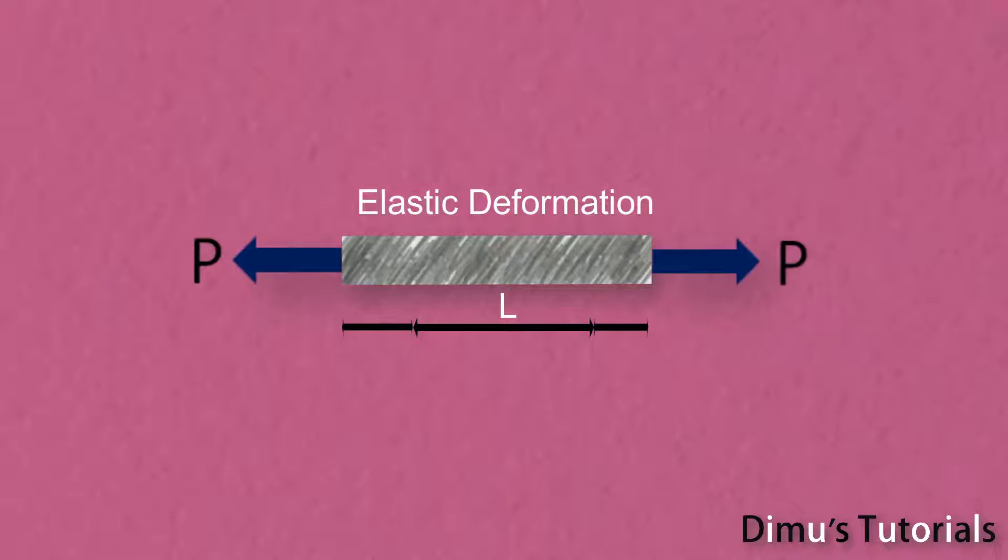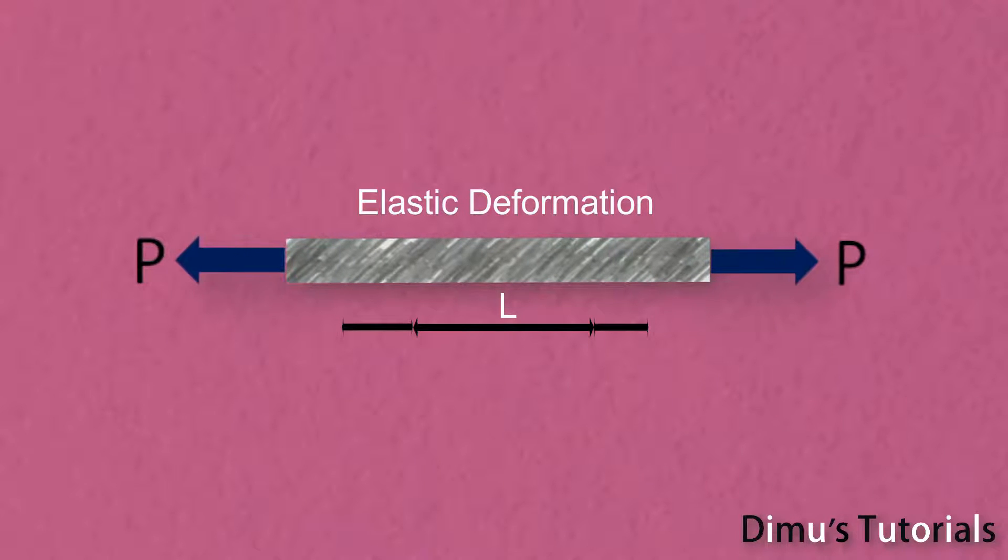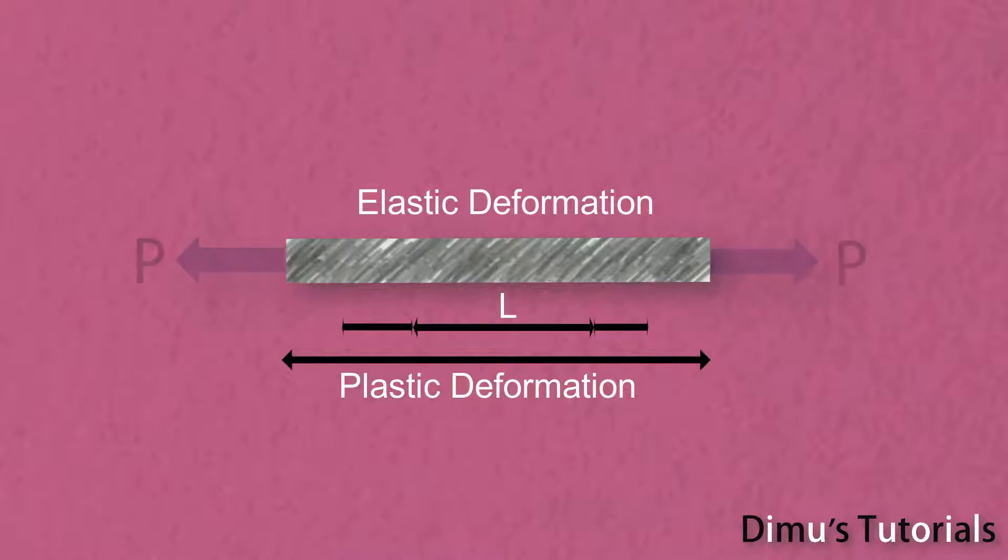If tensile force is increased beyond elastic limit, the specimen will not be able to regain its original length, even when the force is removed. This is called plastic deformation.